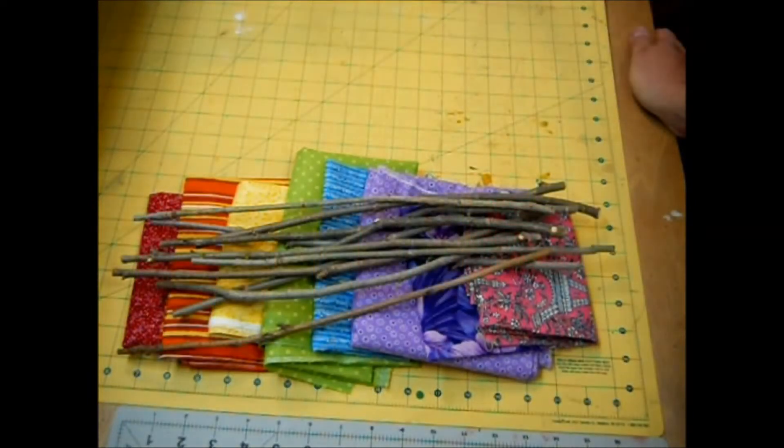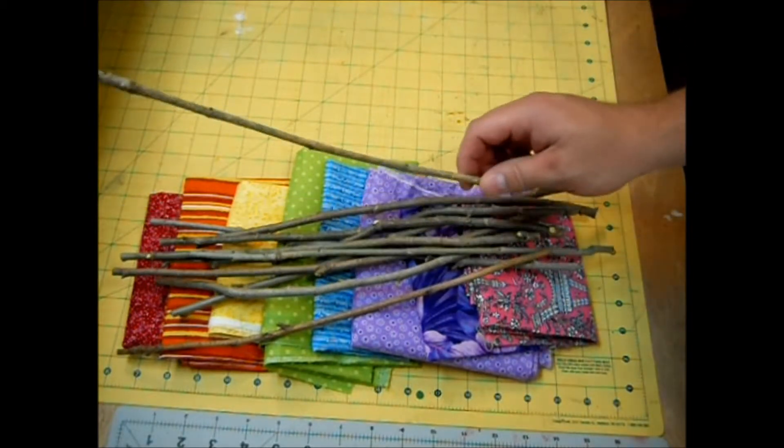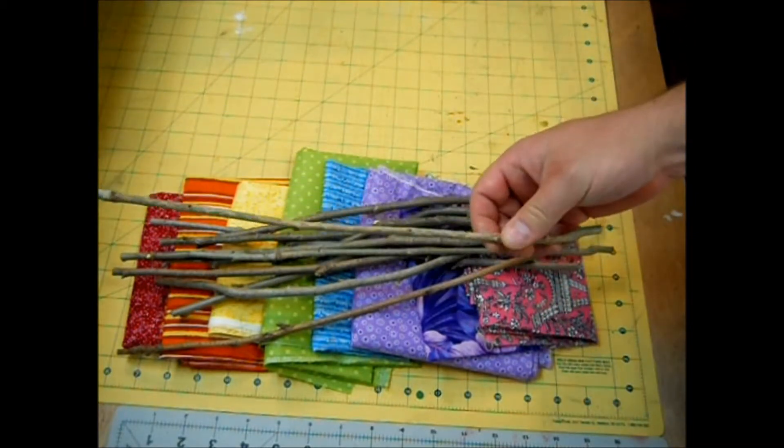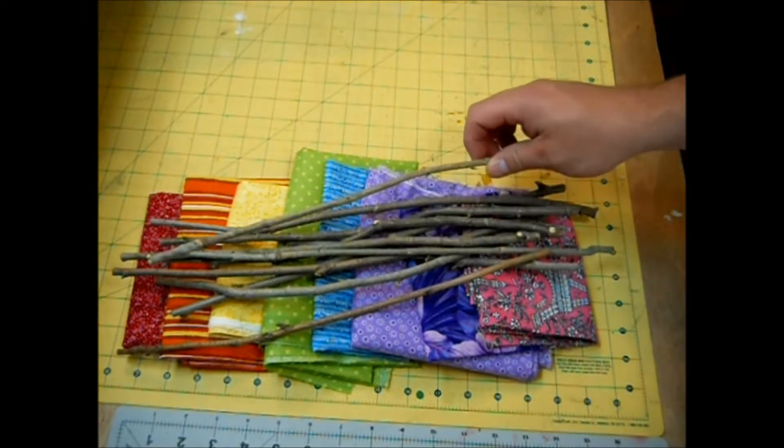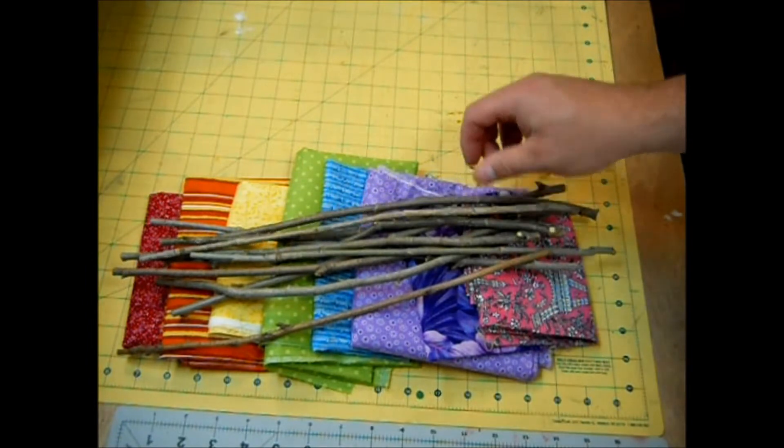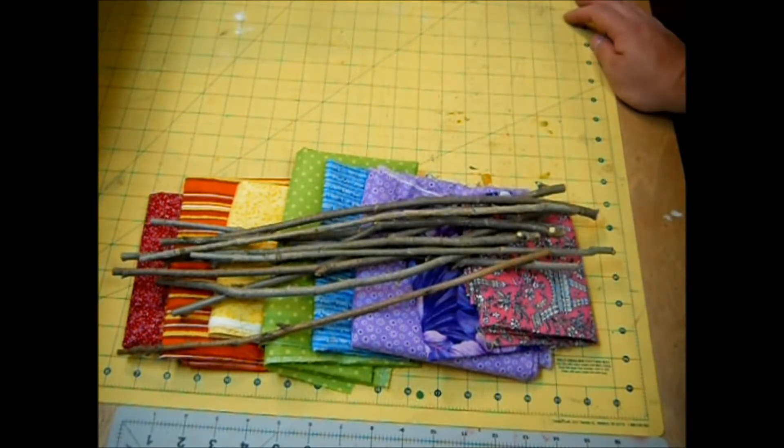You're also going to need something for the stem. Now you could use chopsticks, straws, or anything like that, but I went outside and did a little tree trimming and got these sticks here. They're about a quarter inch thick and about 15 to 16 inches long. When I put these in the vase I may have to trim them down a bit but that's not a problem.